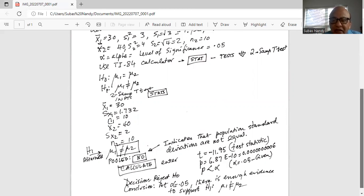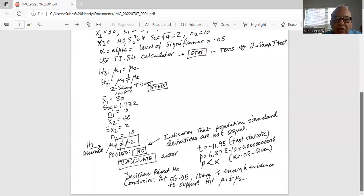Therefore, p is less than alpha. Alpha is given as 0.05. If p is less than alpha, our decision is to reject H0.